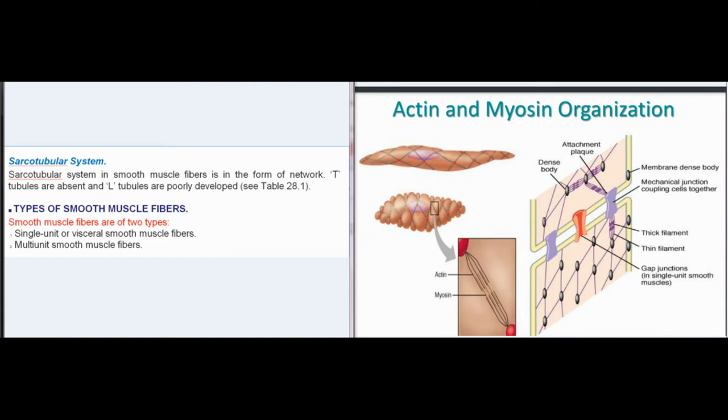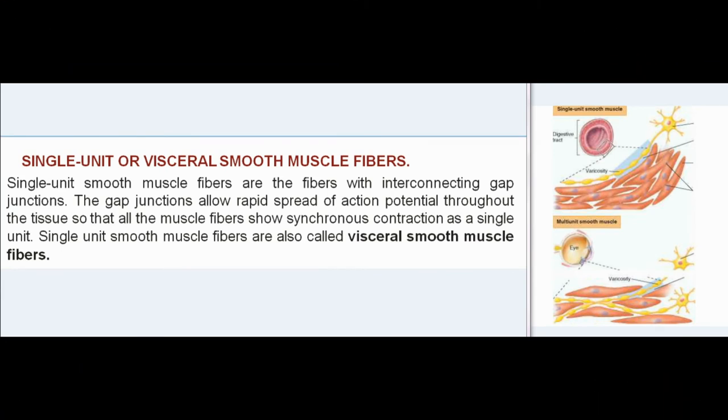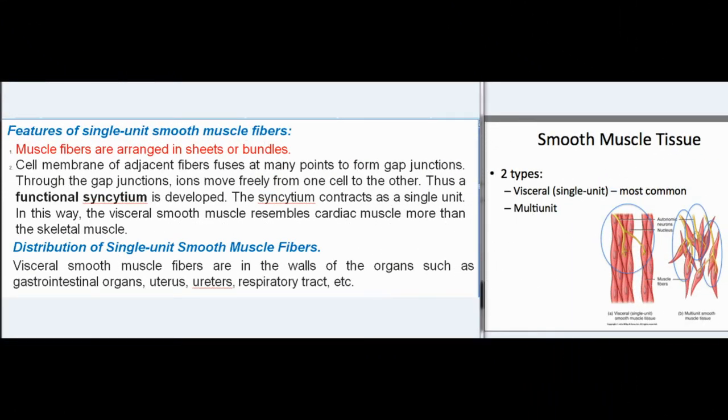Types of smooth muscle fibers: smooth muscle fibers are of two types — single unit or visceral smooth muscle fibers, and multi-unit smooth muscle fibers. Single unit smooth muscle fibers are the fibers with interconnecting gap junctions. The gap junctions allow rapid spread of action potential throughout the tissue so that all the muscle fibers show synchronous contraction as a single unit. These are also called visceral smooth muscle fibers.